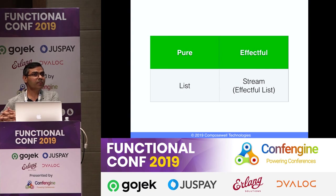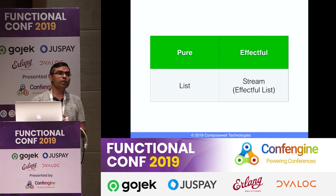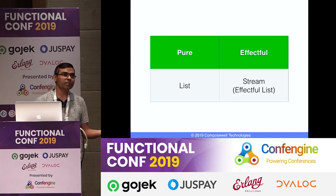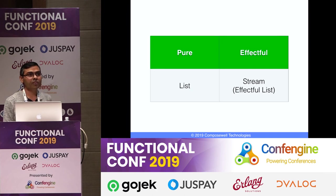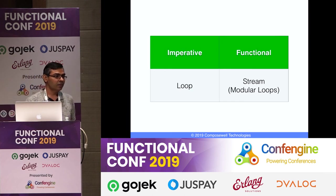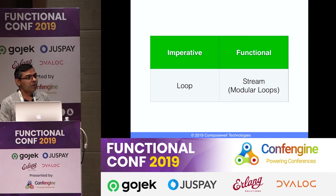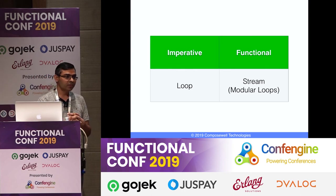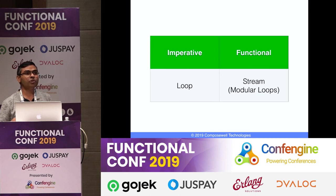Effectful lists are streams where items are dynamically generated using some action — you can keep on generating the list. In pure lists, you have everything already generated. In imperative terms, you need a loop to process a sequence; in functional programming, you need streams. Streams are nothing but modular loops compared to the imperative paradigm.